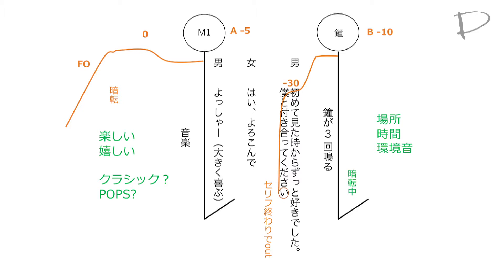その後、暗転が来て、フェードアウトしていく流れになります。この音楽の線の書き方は、暗転の場所から推測すると、おそらくフレーズで0まで上がっていく。そして、暗転してから、フェードアウトしていく流れになるでしょう。